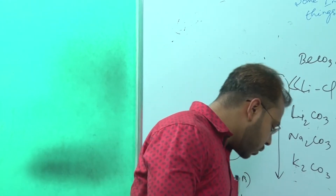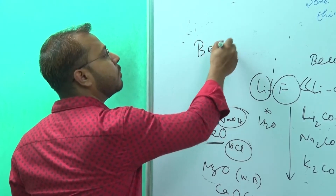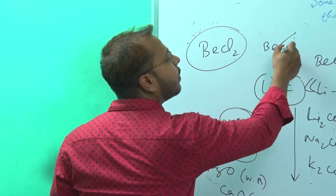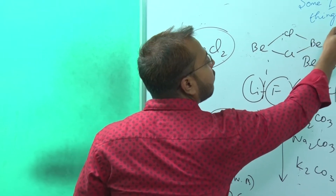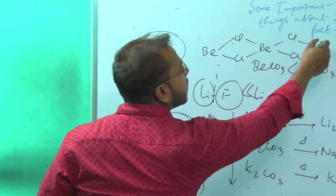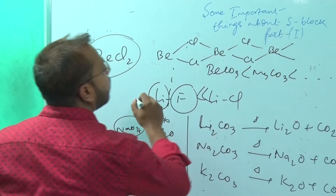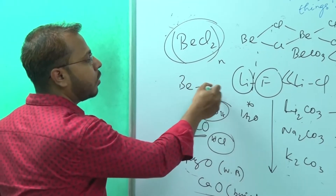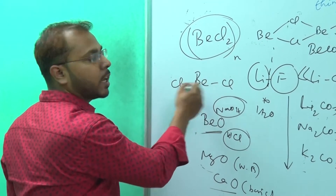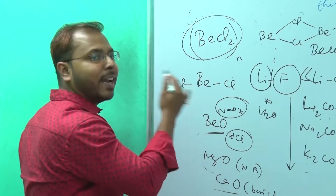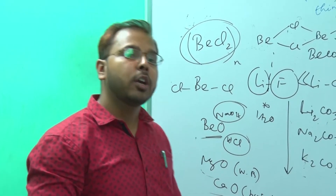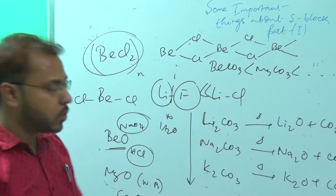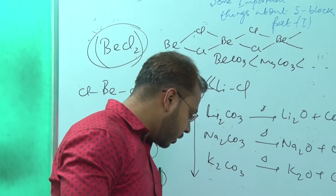An important question is: why can BeCl2 form a polymer-type structure? Because BeCl2 has only 4 electrons surrounding itself. To fulfill its octet, it needs to take electrons from neighboring atoms. That is why BeCl2 forms a polymeric chain structure.